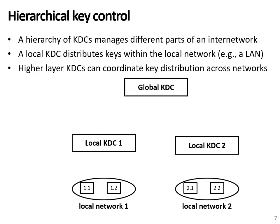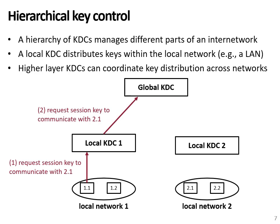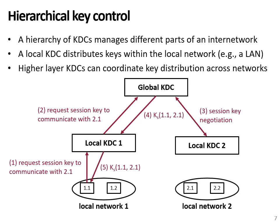However, if multiple networks are involved, things become a bit more complicated. Let's say node 1.1 now wants to set up a communication session with a node outside of its local network, namely node 2.1. It will again request a session key to its local key distribution center. The local KDC maintains a master key to communicate with node 1.1, as well as a master key to communicate with the higher level global KDC. The global KDC knows that node 2.1 is managed by KDC2 and will negotiate a session key. This session key is then sent back to KDC1, and finally in step 5 shared with node 1.1, which can then set up the session in the same way as before.